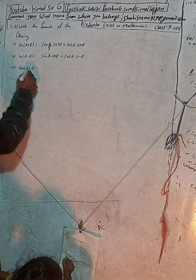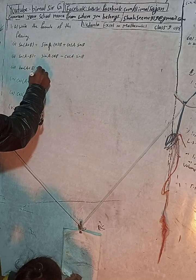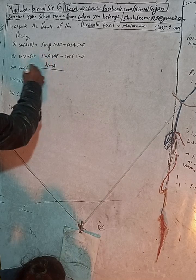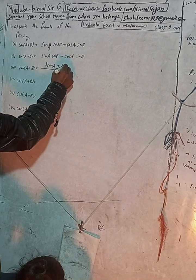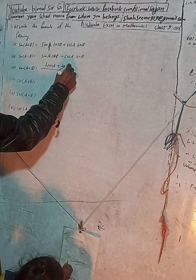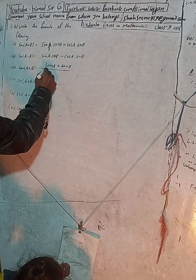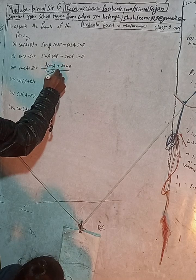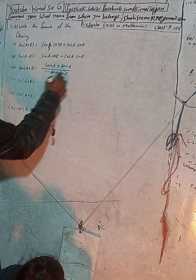This is formula. And tan(A + B) is equal to tan A plus tan B by 1 minus tan A tan B.